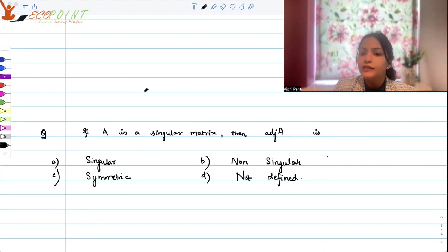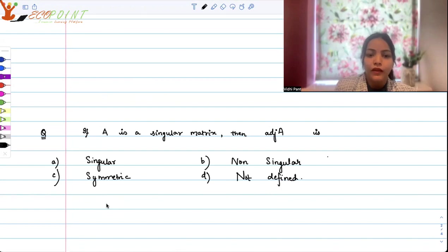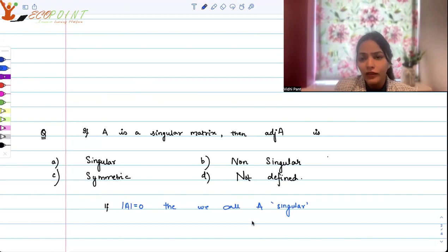If A is a singular matrix, then adjoint A is singular, non-singular, symmetric or not defined. So first of all in this question, we got to understand what do you mean by matrix being singular. So in case the determinant of a matrix is 0, then we call that matrix singular. And if the determinant is not equal to 0, then we call it non-singular.